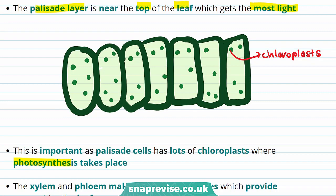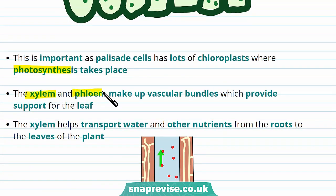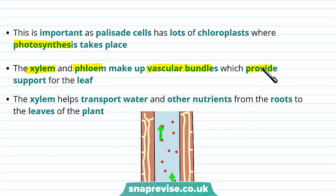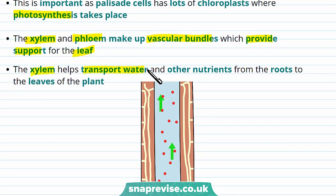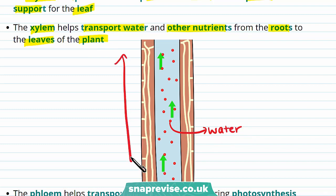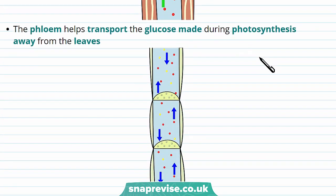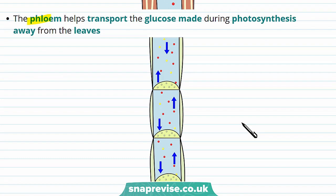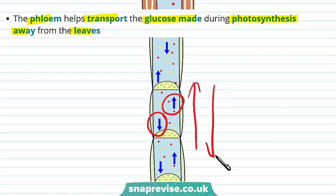Now let's talk about the xylem and the phloem. The xylem and the phloem make up vascular bundles and these provide support for the leaf. The xylem helps transport water and other nutrients from the roots to the leaves of the plant. In this diagram you can see that water is moving up the leaf through a hollow tube which makes up the xylem. This water is really important for the leaf as it uses it to photosynthesise. The phloem is another important part of the vascular bundle and it helps transport the glucose made during photosynthesis away from the leaves. There's actually a two-way flow of dissolved sugars, so sugars can pass either away from or to the leaf, and these sugars are used by the cells of the plant to respire.